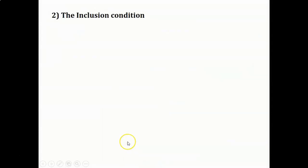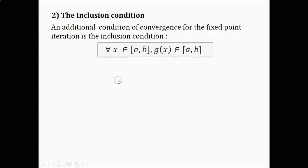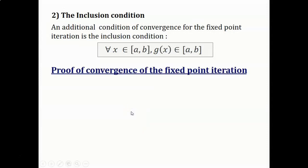The second condition that g(x) has to verify is the inclusion condition. The inclusion condition states that for all x in [a, b], g(x) must belong to [a, b]. We will now prove that if g(x) fulfills these two conditions, then the fixed-point iteration algorithm will converge towards the solution.